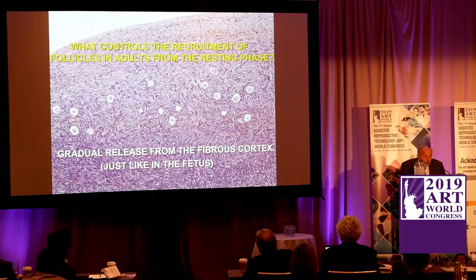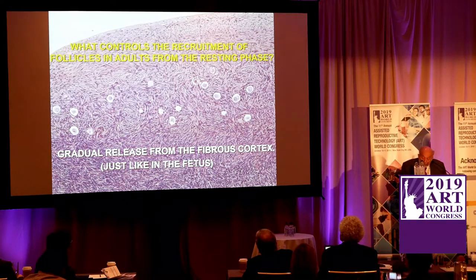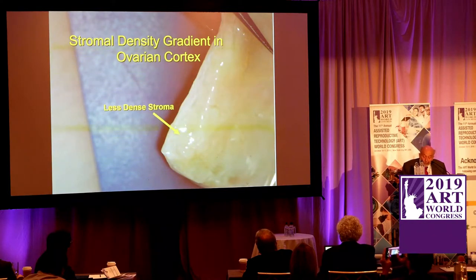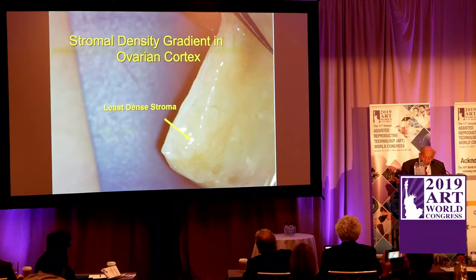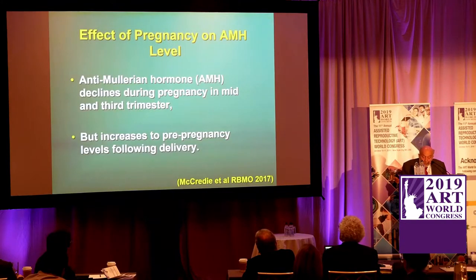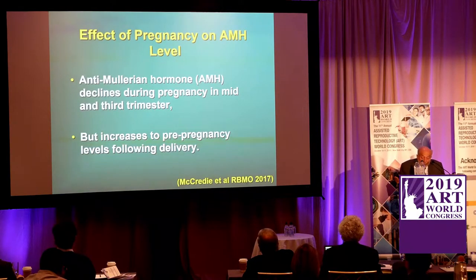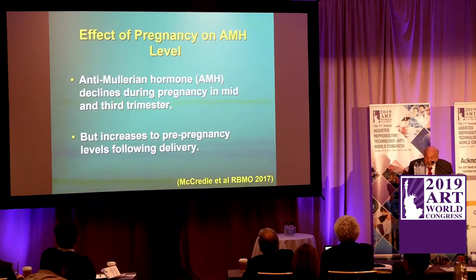What controls the recruitment of follicles in adults from the resting phase is the gradual release from the fibrous cortex, just as in the fetus. The most dense stroma is external, and as you go towards the medulla it becomes less dense. Anti-Müllerian hormone declines during pregnancy in the mid and third trimester but increases to pre-pregnancy levels following delivery — that was shown in 2017.